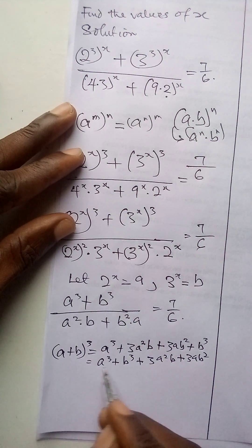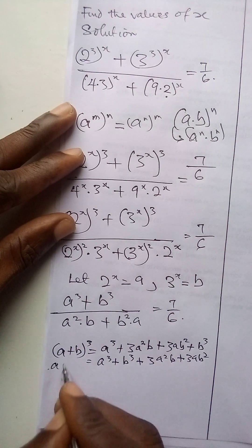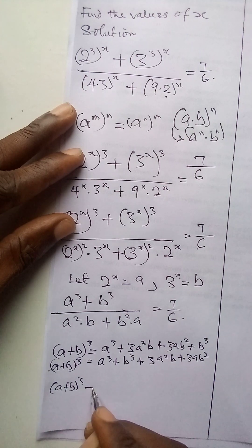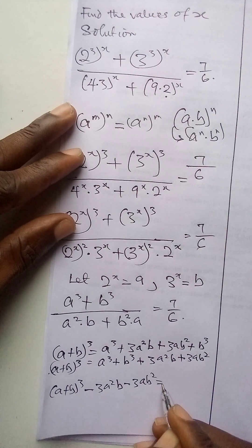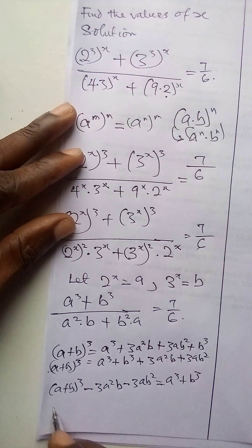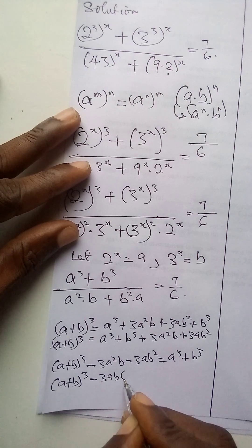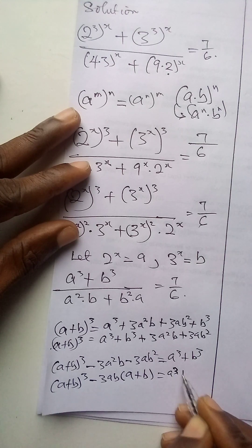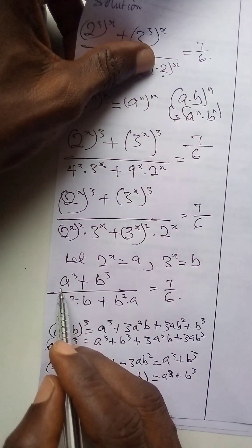We can make a³ plus b³ the subject of this expression. So a³ plus b³ equals a plus b to the power 3 minus 3a²b minus 3ab². Factorizing 3ab from those terms gives us: a³ plus b³ equals a plus b cubed minus 3ab times a plus b. We substitute this into the numerator.